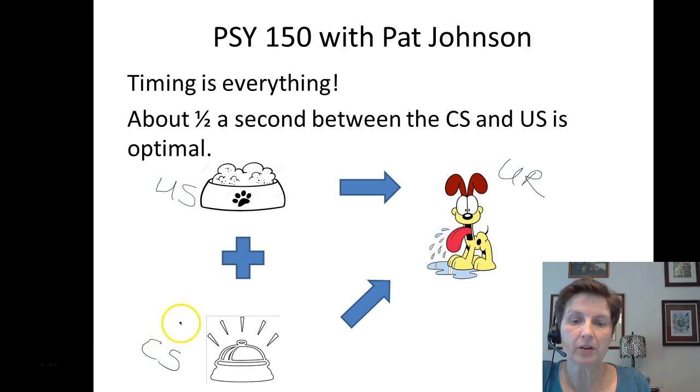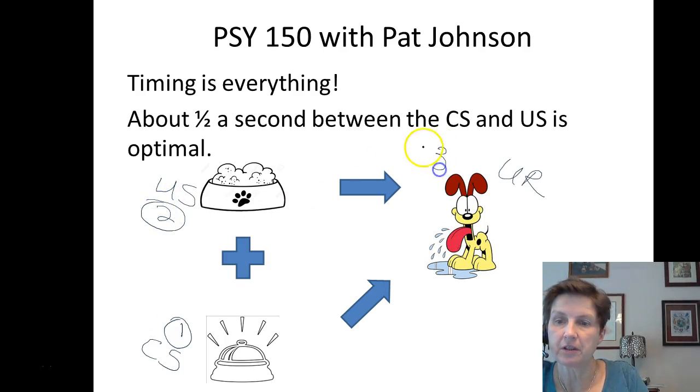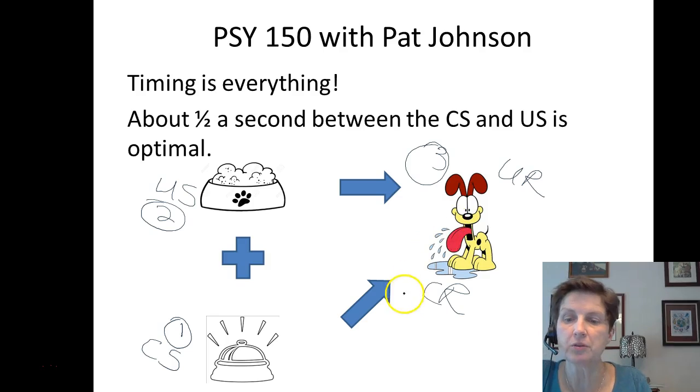So we have the bell coming first, add food, food comes second, and then we have salivation that comes third. So bell plus food causes salivation, and do that enough times and pretty soon the bell causes salivation. So salivation to the bell is a conditioned response. It looks just like the unconditioned response, but remember conditioned means learned.